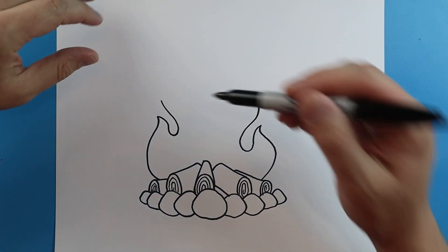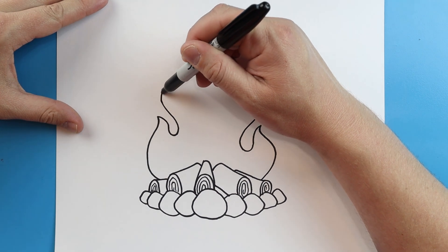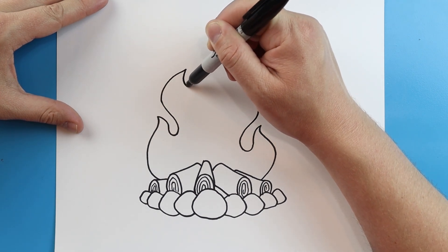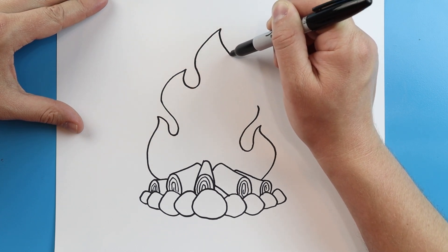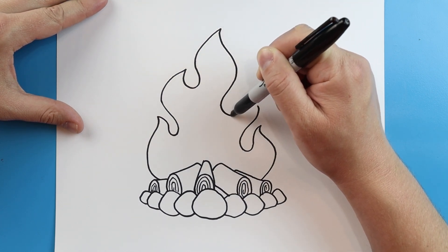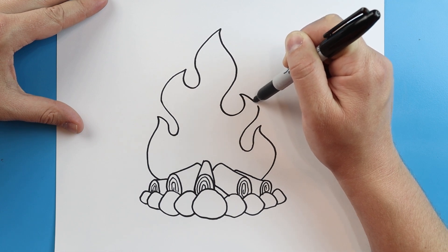Now you can kind of do fire however you want to. I'm just going to make some different little loops and points in here and just a few kind of different little curves just to make it look a little bit more realistic.